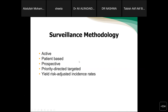As Dr. Ayman told you yesterday, the surveillance methodology is active, patient-based, prospective, priority-directed or targeted, and yields risk-adjusted incidence rates. Active surveillance means we go to ICUs and units to check for infections — if we sit in the office, it is passive surveillance. It is patient-based as our focus is critical care patients only for the first phase. We go prospectively, searching for infections every day, with our priority being critical care patients alone for the first phase.